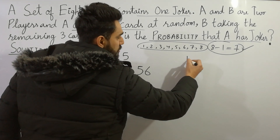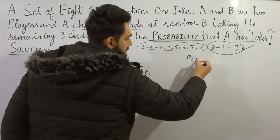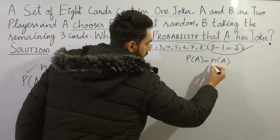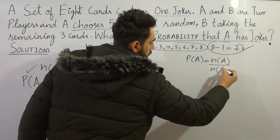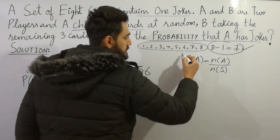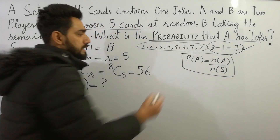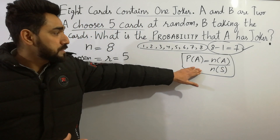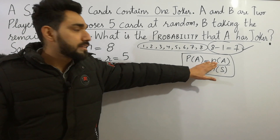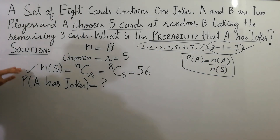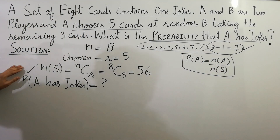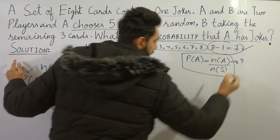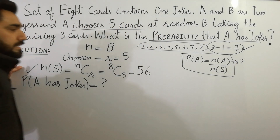The formula of probability is: probability of A is equal to the number in A divided by the number in the sample space. The total sample space I have already calculated, but you have to calculate the number in A.